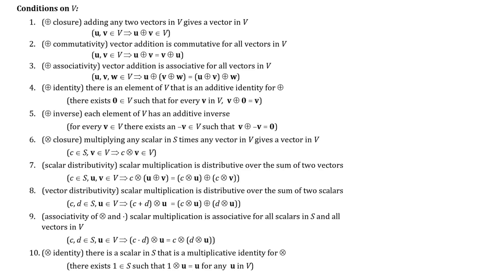We want to check which conditions hold and justify that briefly. For additive closure: if I add two polynomials, combine like terms, and add the coefficients — will I still get integer coefficients? Yes, because when you add two integers you get another integer. So additive closure is satisfied.